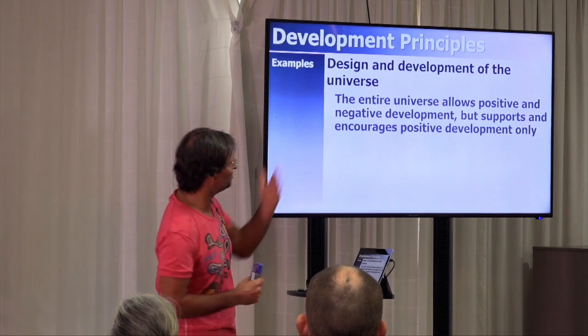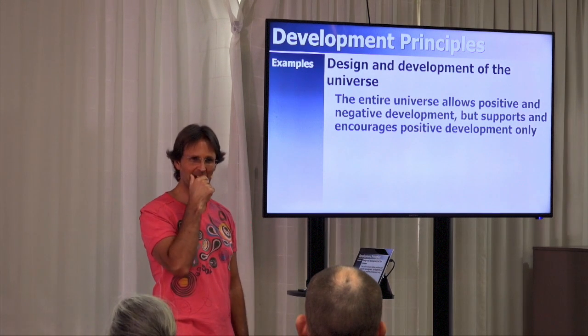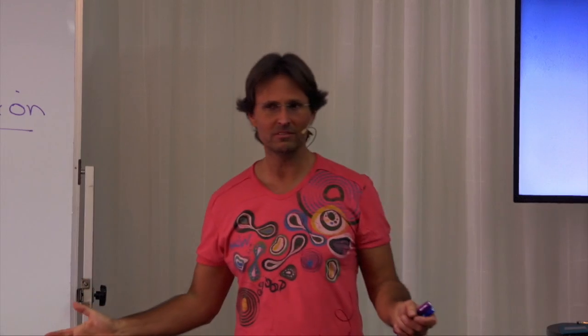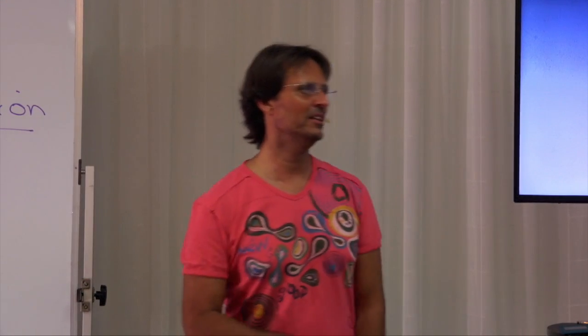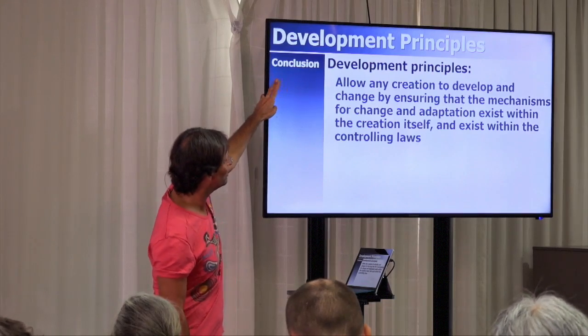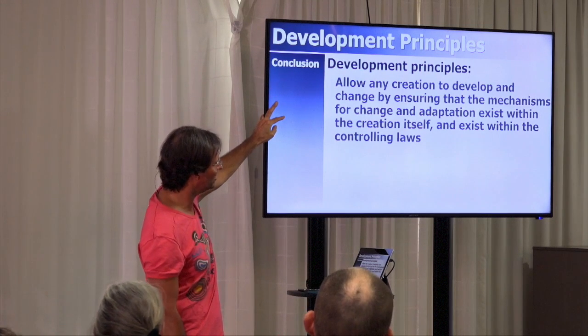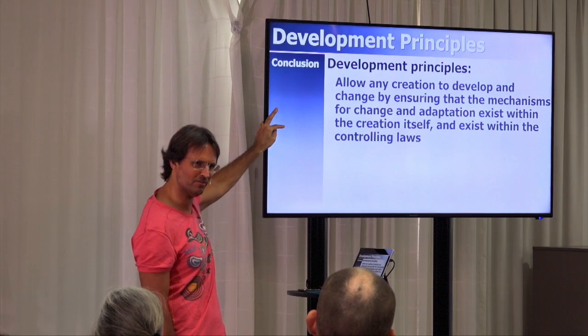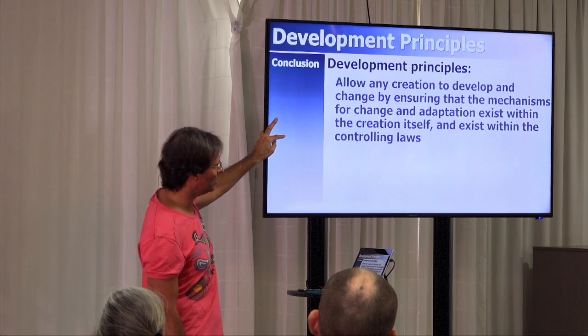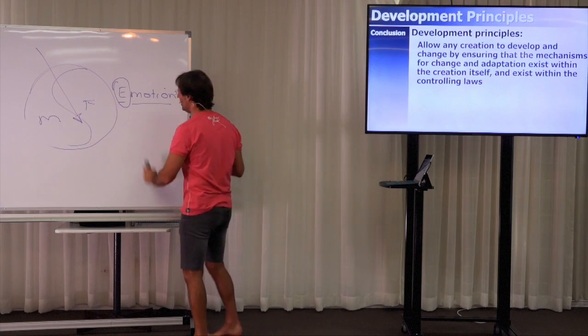The entire universe allows positive and negative development but supports and encourages only positive development. It allows both, but in the end it's going to create only a positive direction. Development principles allow any creation to develop and change by ensuring that the mechanism for change and adaptation exists within the creation itself and within the controlling laws. How God allows development to occur when you consider the interaction between law and creations is quite interesting.